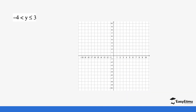Now we have y, so we are going to work this out on the y-axis. The first condition is y is greater than negative four. Since there is no equal sign attached to the greater-than, negative four is going to be a dotted line. Let's draw that dotted line.